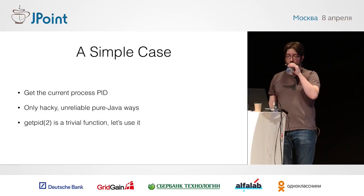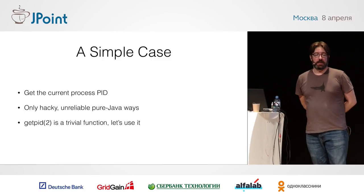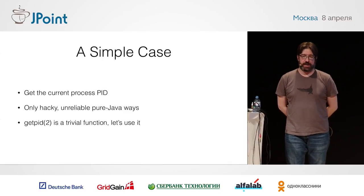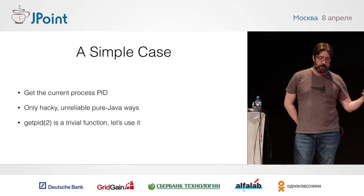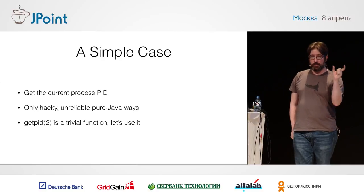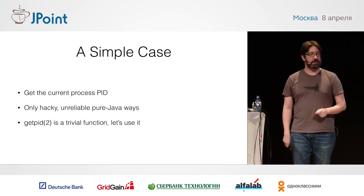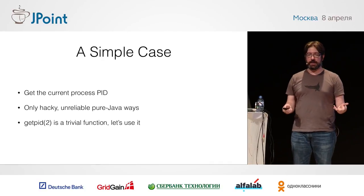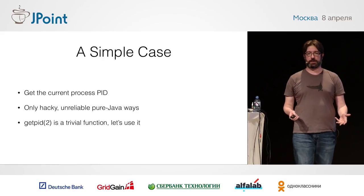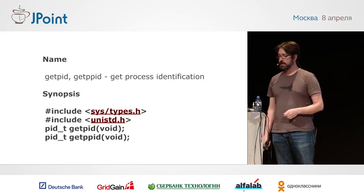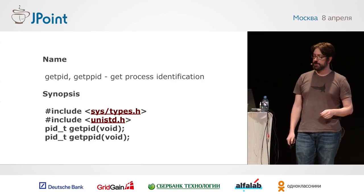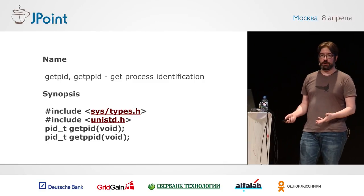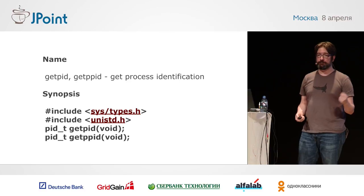A simple case we'll look at to start: getting the current process ID. This is actually very tricky to do on the JVM. There are a few hacky ways — one of the JMX management beans that come with the JVM, you can do a toString on it and parse that string, and embedded in there is the PID of the current process. Obviously pretty cumbersome and pretty fragile. Getting the PID turns out to be a very trivial C function — we should just be able to call it from the JVM. The man page shows it returns a pid_t, which on most platforms is basically a long value.